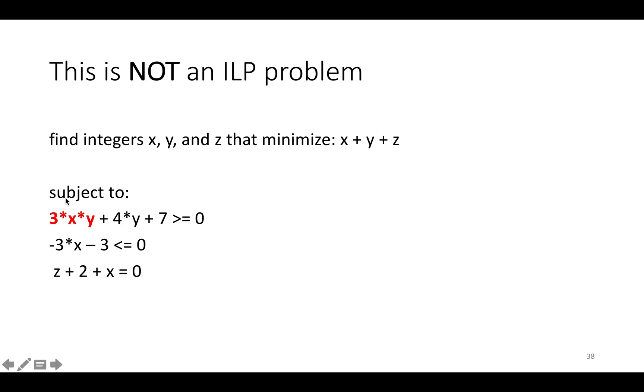On the other hand, if we do 3x times y + 4y + z >= 0 in the constraints, it's not an ILP because x times y is not linear. It's not just a constant times a variable, it's constant times variable times variable.